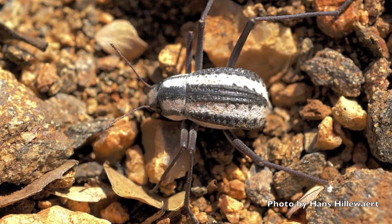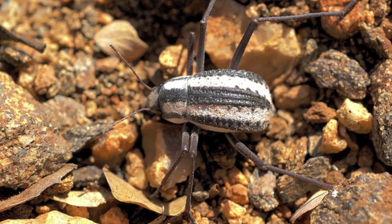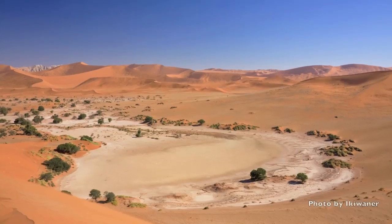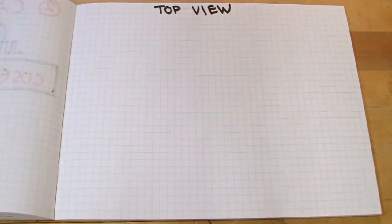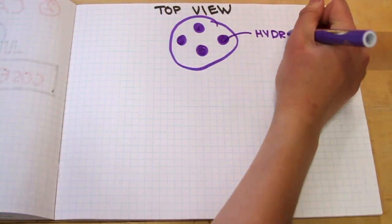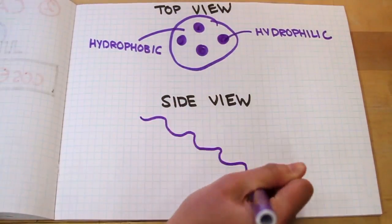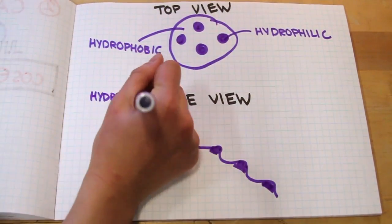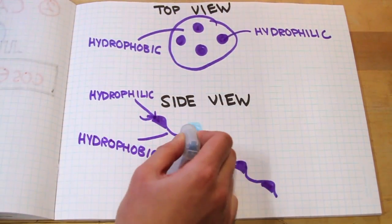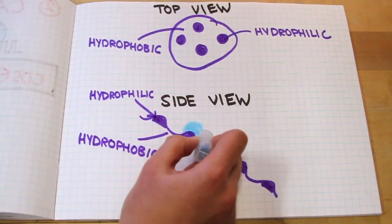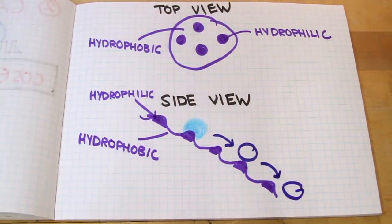A cool example of how hydrophobicity can be useful is how the Namib Desert beetle collects water to drink. This beetle lives in the Namib Desert in Africa and has a very special back with little hydrophilic islands surrounded by hydrophobic areas. Tiny fog droplets collect on the hydrophilic islands and grow into larger droplets. Once large enough, the droplets roll down the beetle's back and are collected to drink.